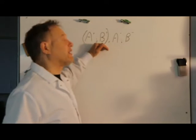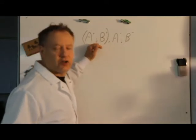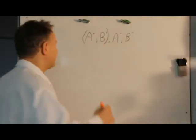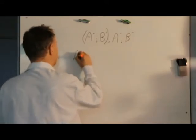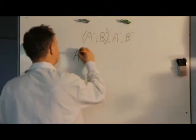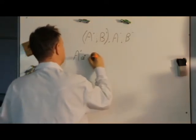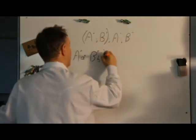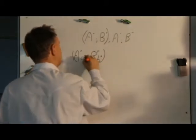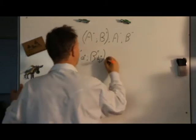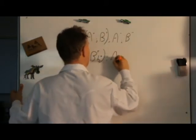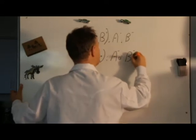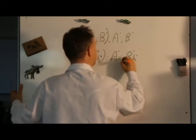We're going to take that control statement and turn it into a sequential statement. So we write down the valves: A plus, then a bracket with B plus, then A minus, B minus, and B minus. First thing we do with every sequential statement is put our air supply in.